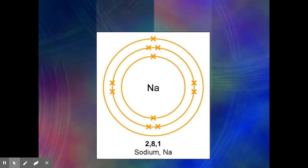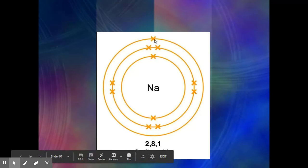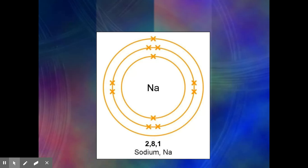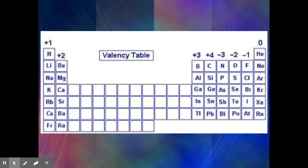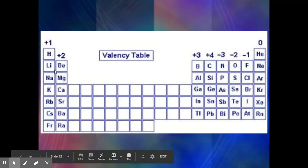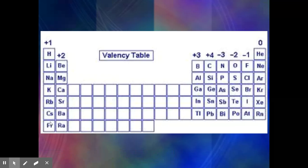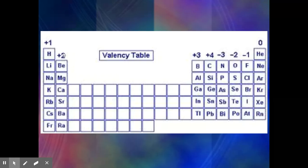Sodium has one valence electron, so it wants to get rid of that to have 8 in its outer shell. Getting rid of one electron gives it an overall plus 1 charge. Looking at the periodic table: group 1 all have one valence electron, so they lose that 1 and get a plus 1 charge. Group 2 all have two valence electrons, so they lose those two, giving them an overall plus 2 charge.